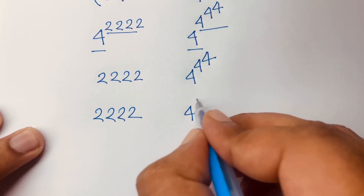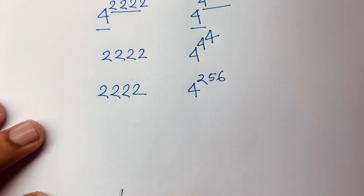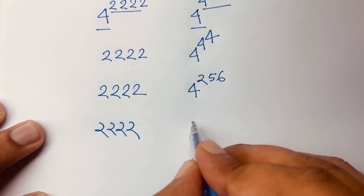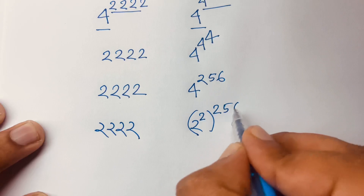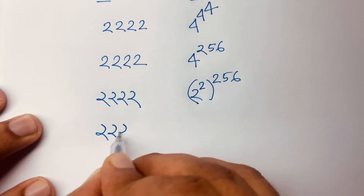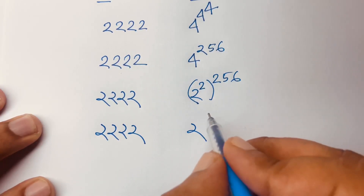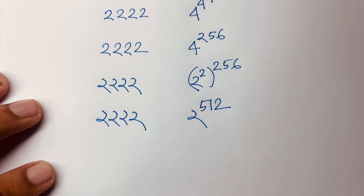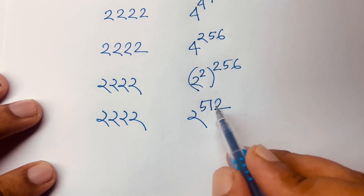Now, 4 to the power 4 equals 256. So the right-side exponent tower evaluates upward: 4^4 = 256. Meanwhile, on the left side the exponent tower of 2s: 2^(2^(2^2)) = 2^(2^4) = 2^16 = 65536... let me compute — 2^2^2^2^2 evaluates to 2^512. So the left exponent is 2^512.